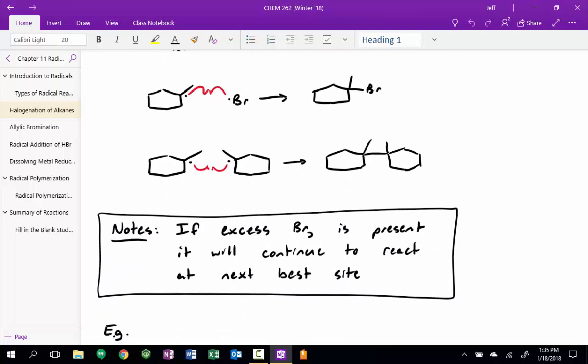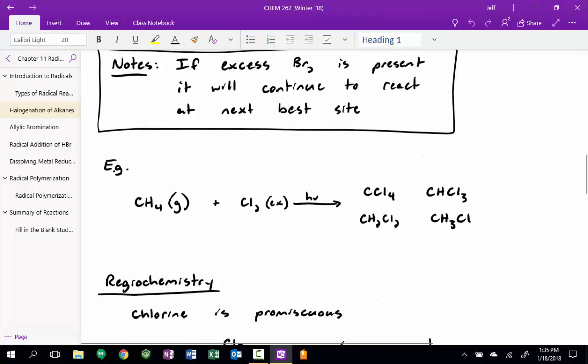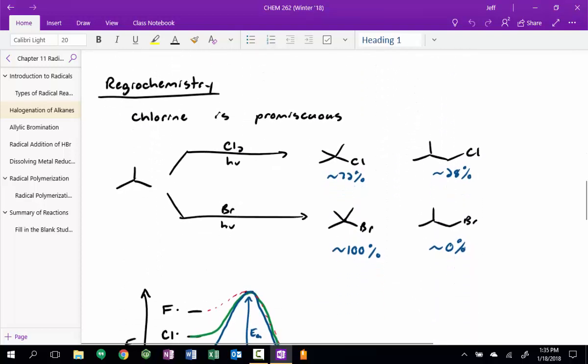And then one thing I said is if you have excess reagent, you can continue to overhalogenate, so oftentimes you are very careful with how much bromine you add, because you only want it added to one position. And then I went on and showed you that radical chlorination is a lot less selective than bromination, so we typically don't see it very often. And what was the problem with fluorination? It was way too reactive. It was nearly impossible to control, so it's not synthetically useful.